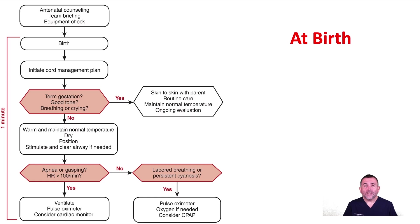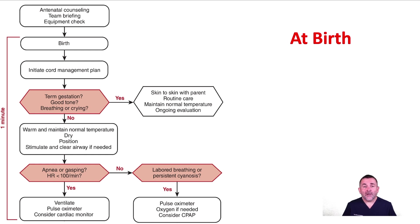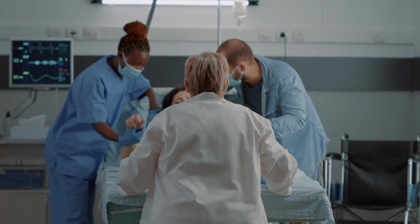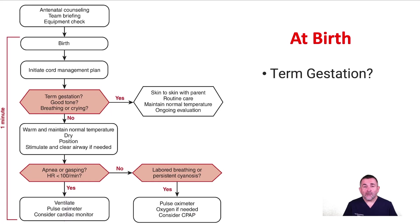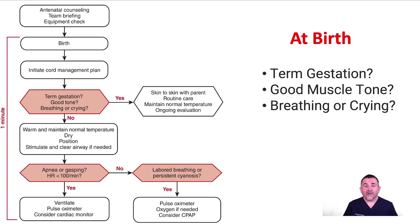At birth, all newborn infants require an initial evaluation to determine if they can remain skin-to-skin with their parent to continue the transition, or if they should be moved to the radiant warmer for further assessment and possible treatment. This initial evaluation may occur during the interval between the birth and umbilical cord clamping. We need to ask the following three questions at birth: Term gestation? Good muscle tone? Breathing or crying?